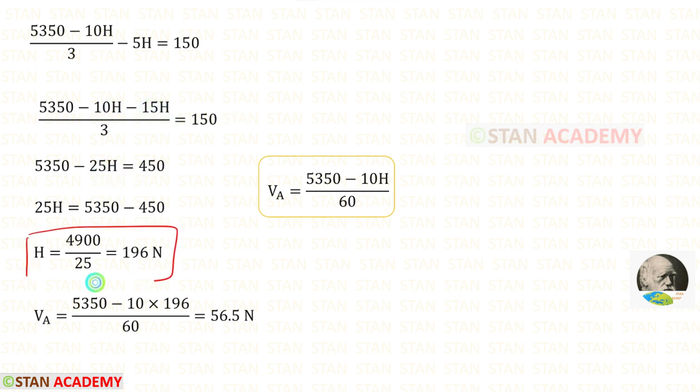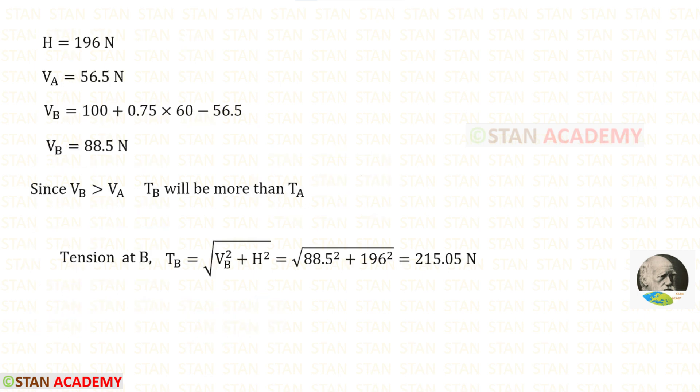Finally for H we get 196 N. Using this equation we can find VA which is 56.5 N. We have calculated the horizontal thrust H and the vertical reaction VA.